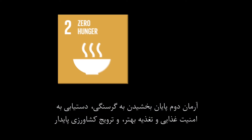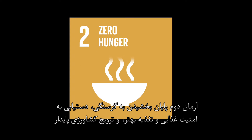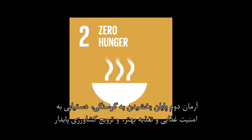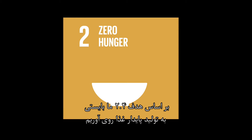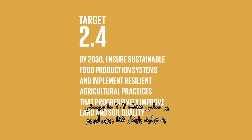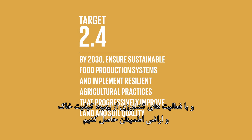The goals of SDG2 are to end hunger, achieve food security and improved nutrition, and promote sustainable agriculture. Target 2.4 demands that we must produce food sustainably and use agricultural practices that improve land and soil quality.